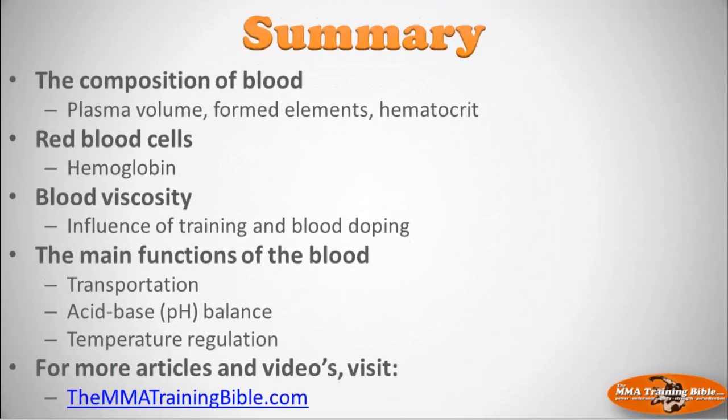That's it for this video lecture — a quick overview on the blood. We covered the composition of blood including plasma volume, formed elements and hematocrit, red blood cells and hemoglobin, blood viscosity and the influence of training and blood doping, and the main functions of blood: transportation, acid-base balance, and temperature regulation. For more information on combat sports, mixed martial arts, and the science of training, go to mmatrainingbible.com.